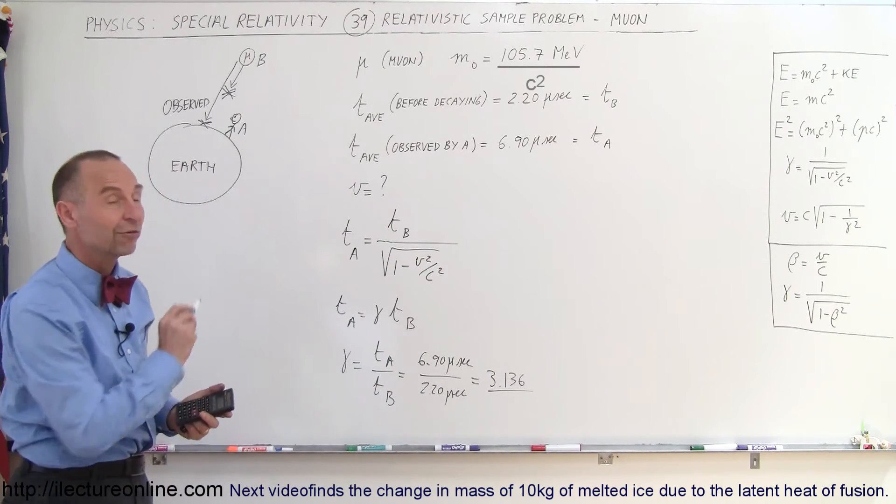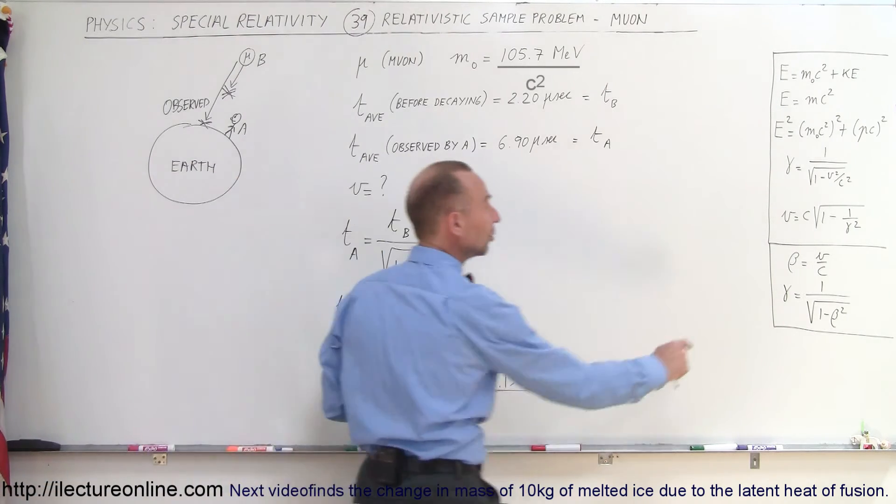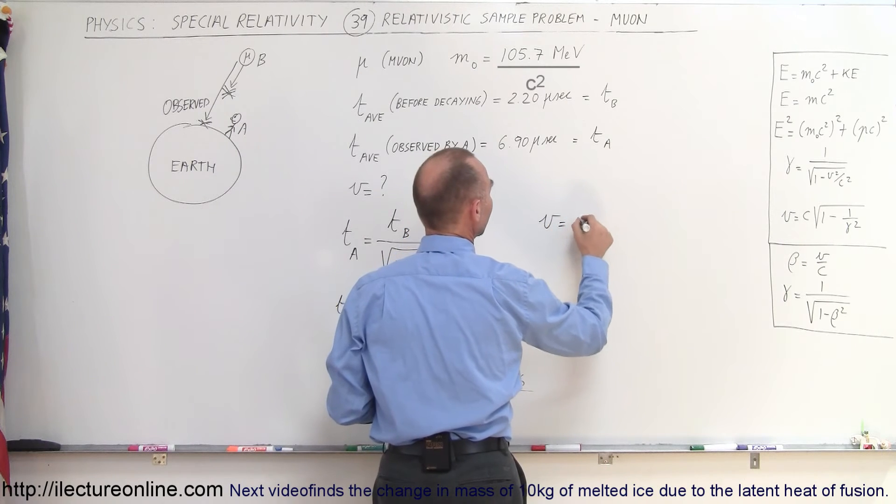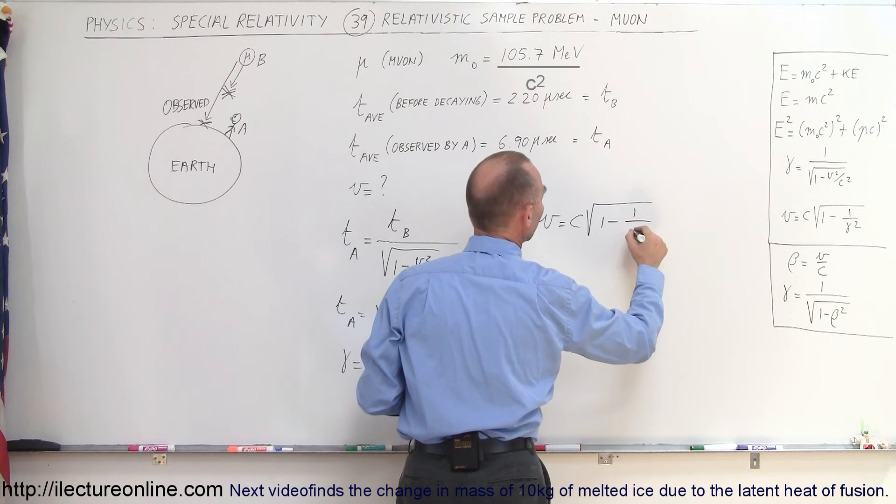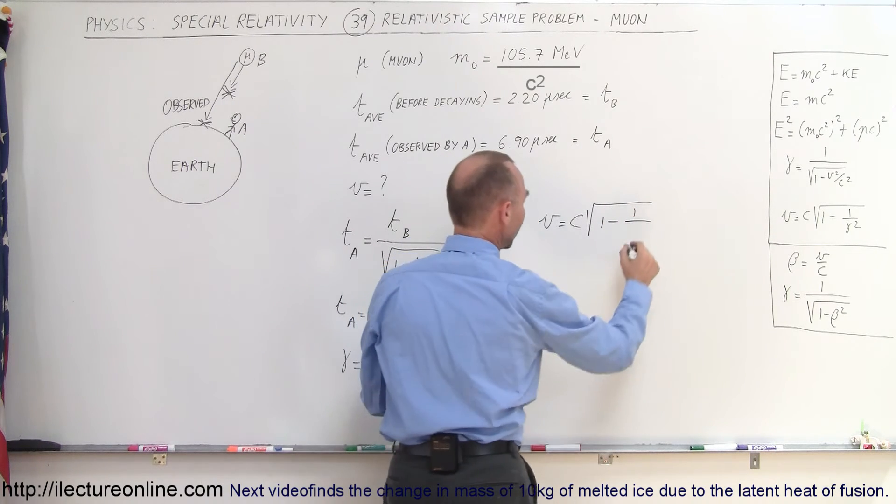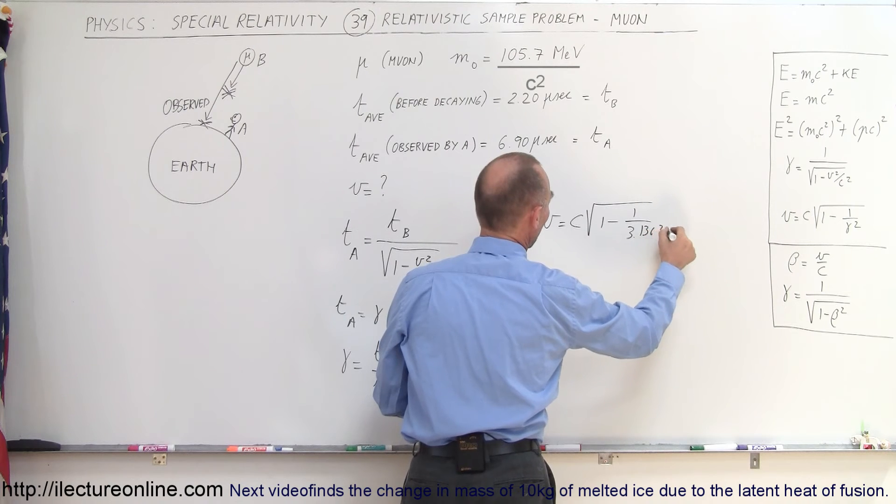From that, we should be able to find their velocity. So, we go to the equation right here, so we can see that the velocity is equal to the speed of light times the square root of 1 minus 1 over, and of course, we would get 3.136 squared.